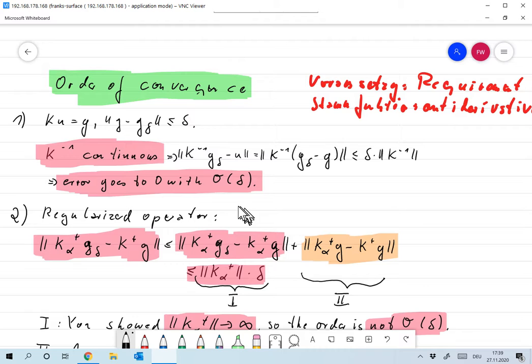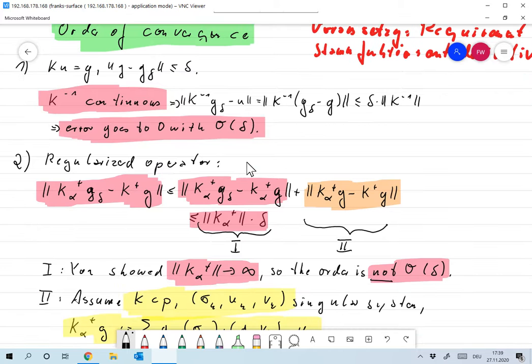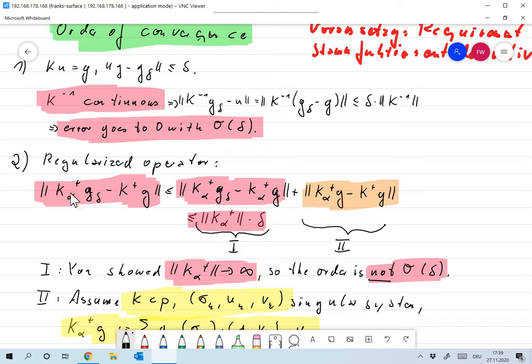Now what if we're instead looking at a regularized operator? In this case, we use the split of the error that we've used several times now. So the approximation that we get, U alpha plus, is K alpha plus applied to G delta with alpha chosen with some parameter choice and so on, minus K plus G. This can be written as K alpha plus times G delta minus K alpha plus G plus the norm of K alpha plus G minus K plus G. We already discussed this splitting.